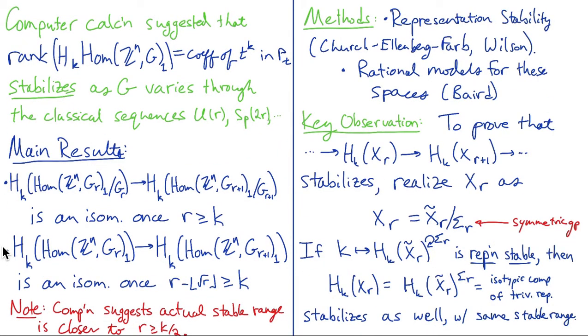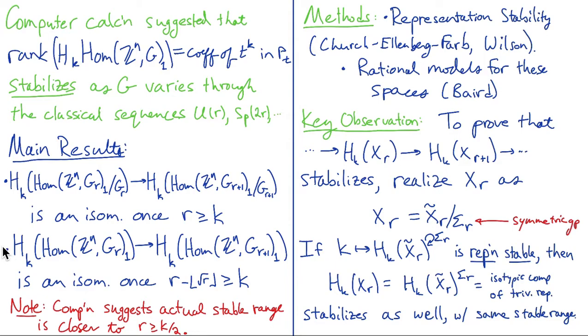So I want to explain some about the methods that go into this. Basically, the methods are representation stability. And specifically, we're using work of Church Ellenberg-Farb. And then Jenny Wilson generalized their work from just looking at representations of the symmetric group to looking at representations of Weyl groups, such as like the Weyl groups of the symplectic groups. So that's one of the main tools that we're using.